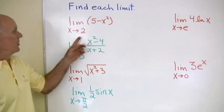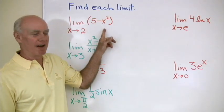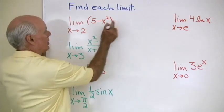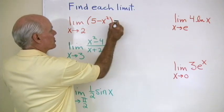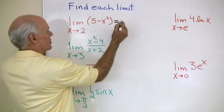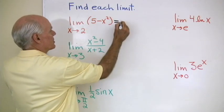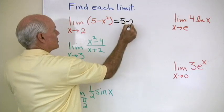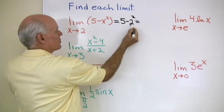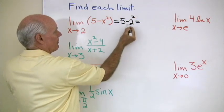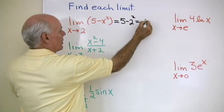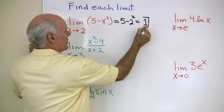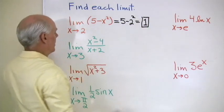Let's start with the limit as x goes to 2 of 5 minus x squared. This is a polynomial function, so we can just substitute. This is going to be 5 minus 2 squared. 2 squared is 4, 5 minus 4 is 1. So that limit turns out to be 1.